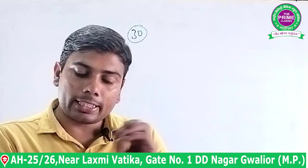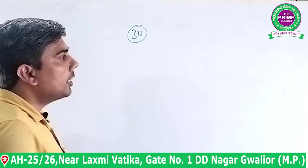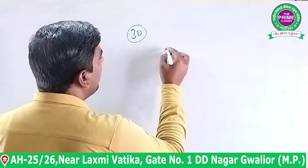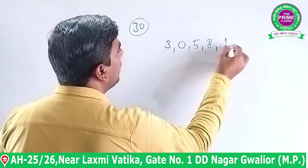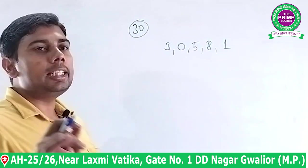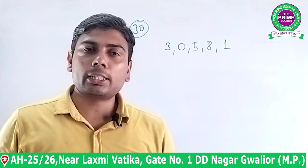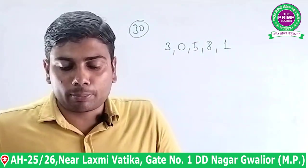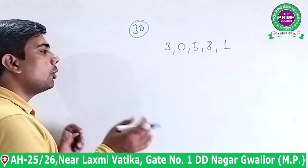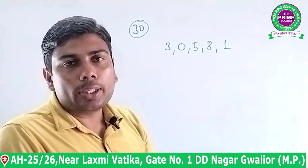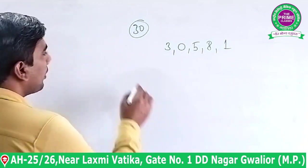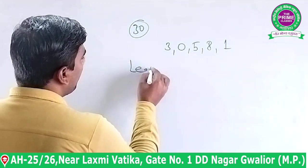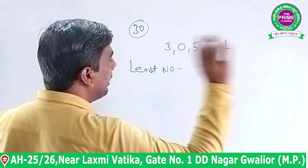तो पहले देखते हैं — digits हैं 3, 0, 5, 8, 1। इनसे least यानी smallest और greatest यानी सबसे बड़ा number construct करेंगे, उनका sum करेंगे, और उसके बाद 28576 subtract करेंगे।